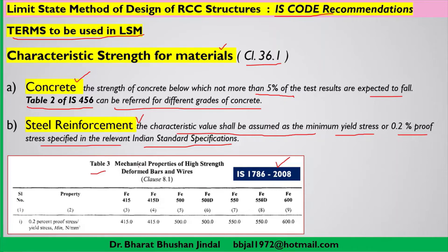Table number 3 of IS1786:2008 gives information regarding the mechanical properties of high strength deformed bars and wires used in RCC structure design. Earlier, mild steel was used in RCC structures, but nowadays mild steel is no longer used. Table 3 provides information on high strength deformed bars and the grades of steel from which reinforcement bars are manufactured.